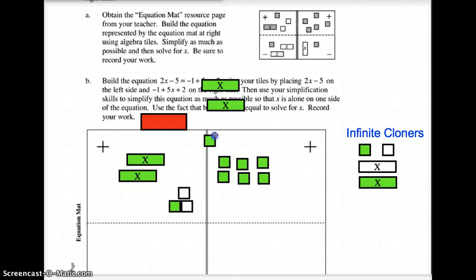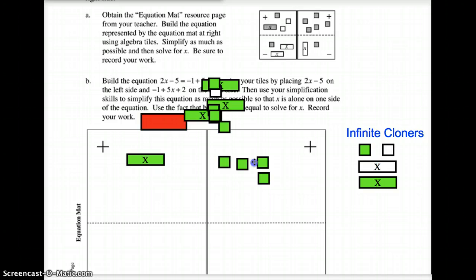These two here cancel. Let's get rid of them. Adios, amigos. Sayonara. Habita, teche. I think that's how you say it, but I don't know. Anyways, on the left side, I've got two x's left over. On the right side, I've got six. If I divide both sides by two, then this one and these three go away, and I'm left simply with x equals three.